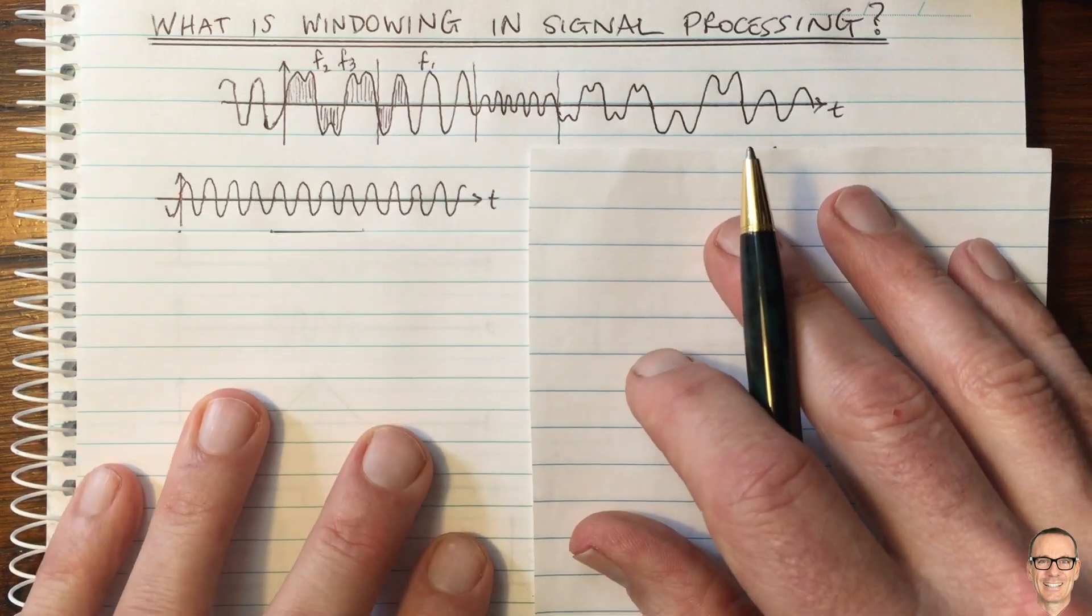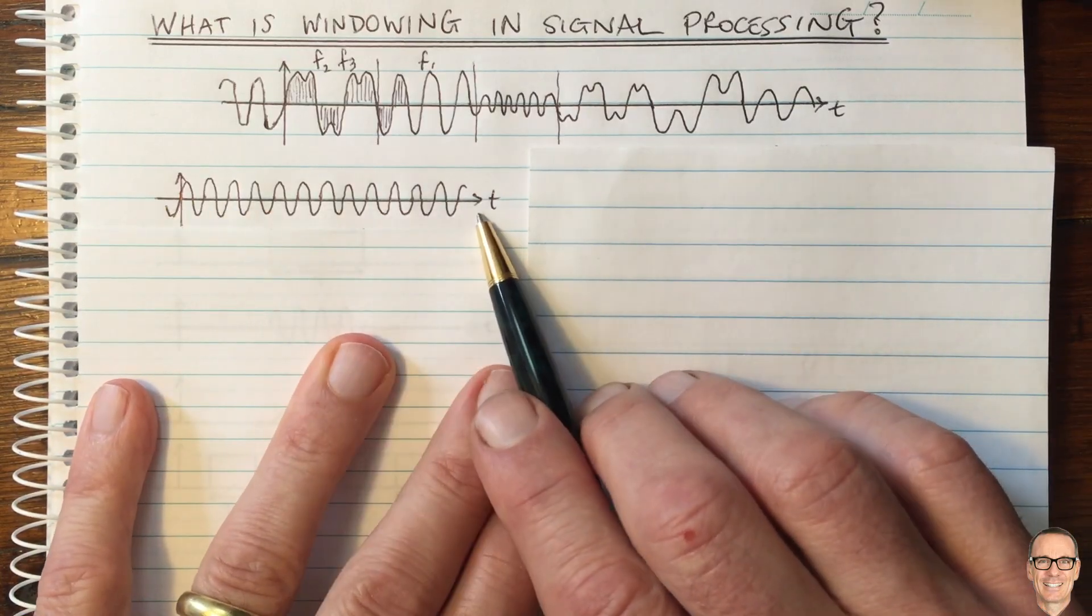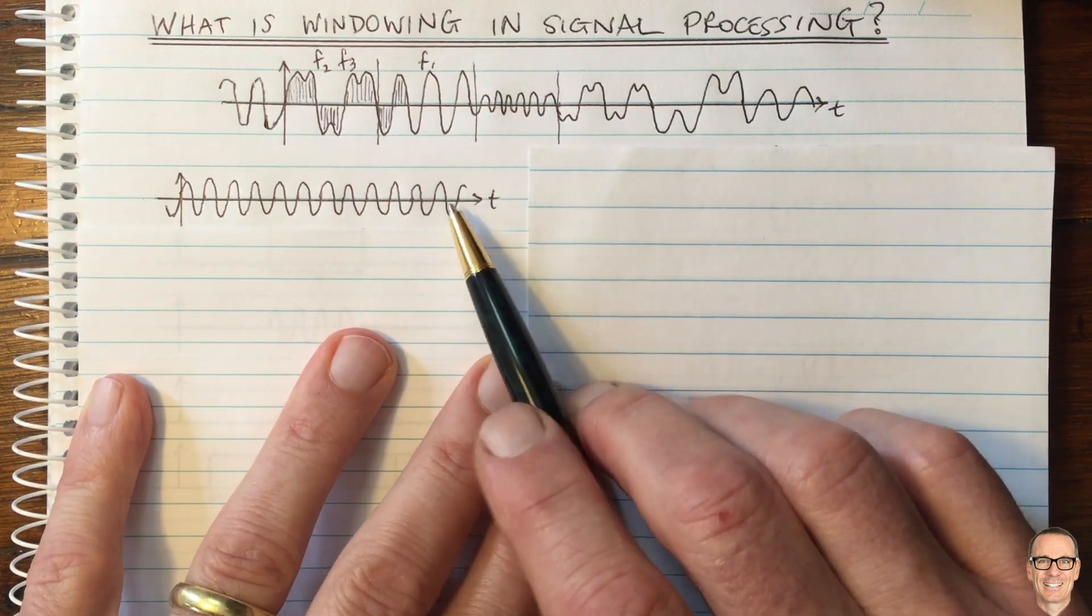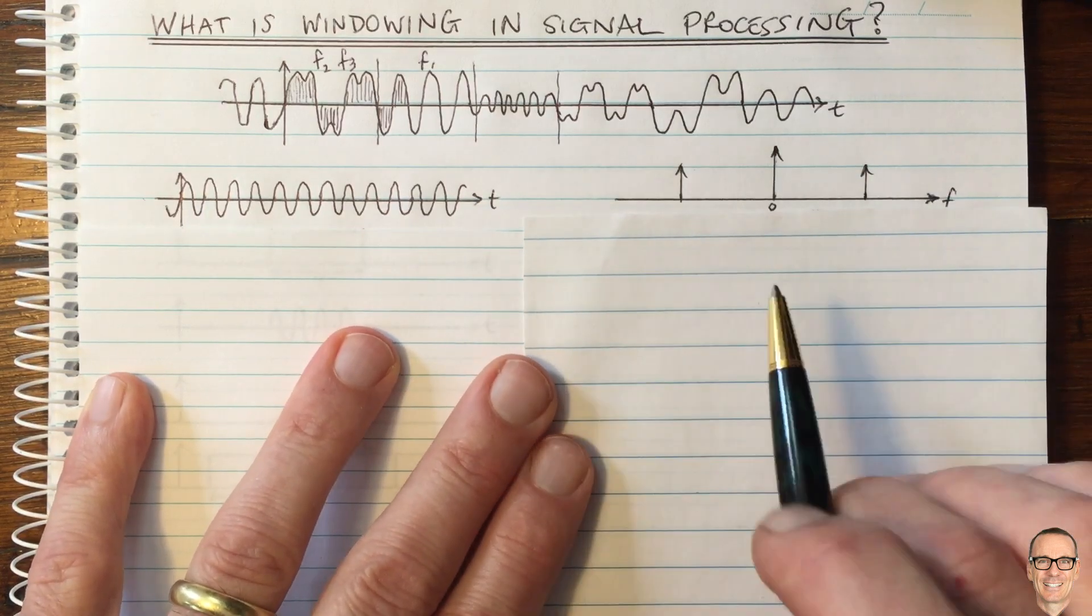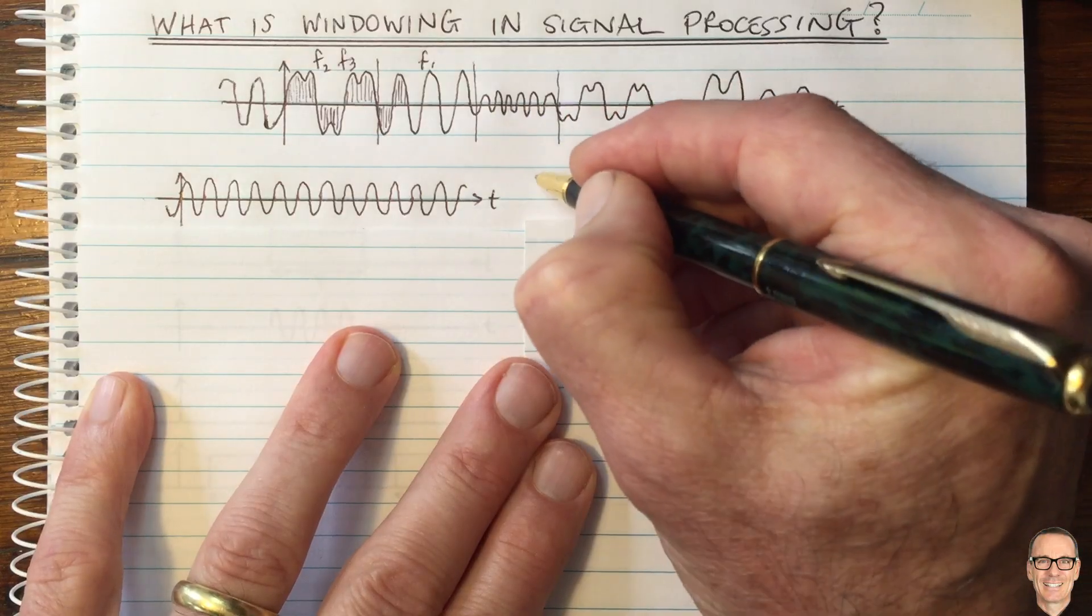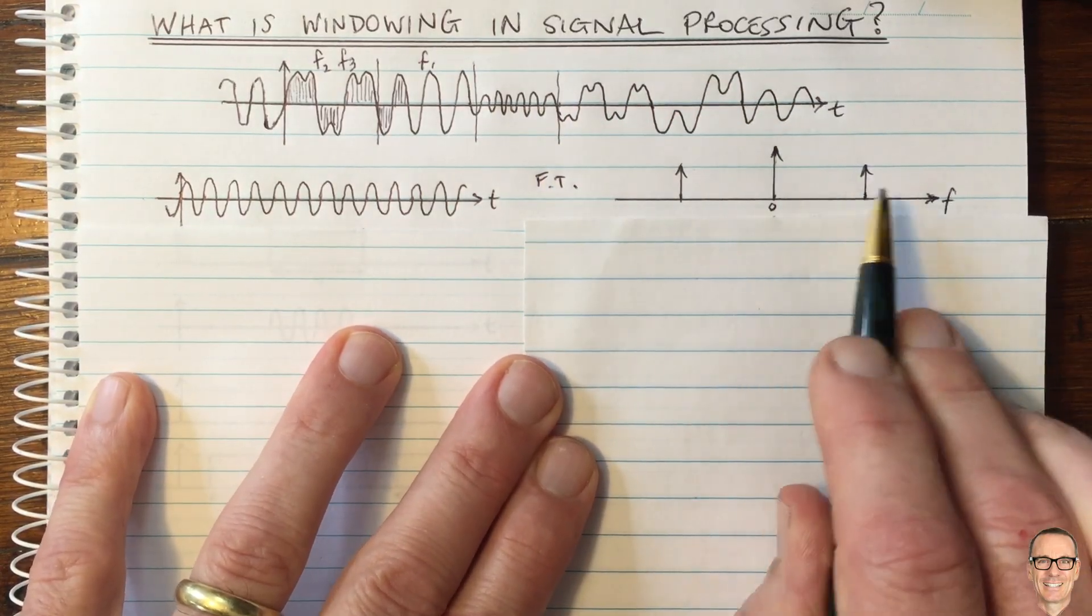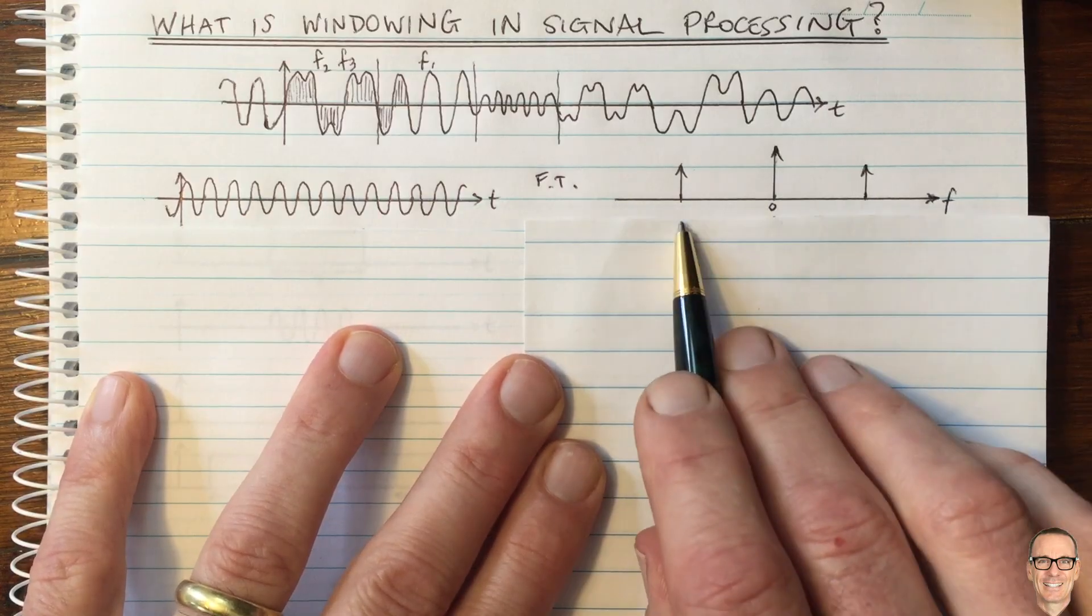Let's start by thinking about a single sine wave. So here's a single sine wave, which goes forever. And in the frequency domain, that has a Fourier transform which looks like this. There are just two spikes, one positive and one negative at that frequency.